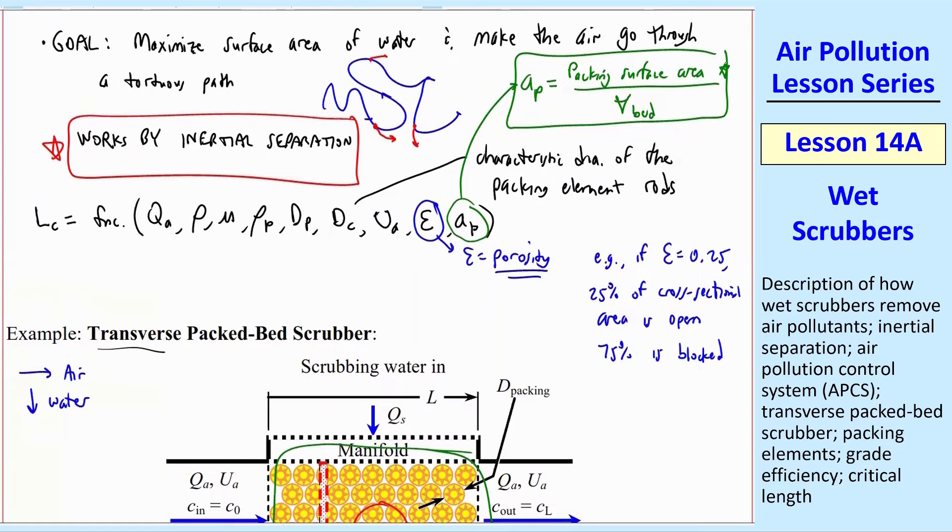You get one of these packing elements that has lots of rods and stuff sticking out. You have a lot of surface area per volume of the bed. The dimensions of AP would be 1 over length, as you can see in its definition.